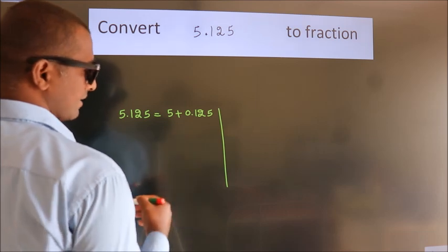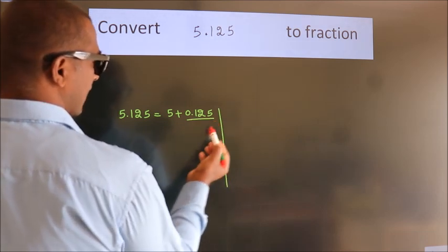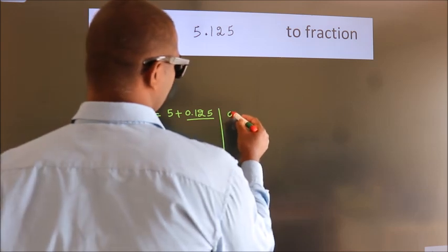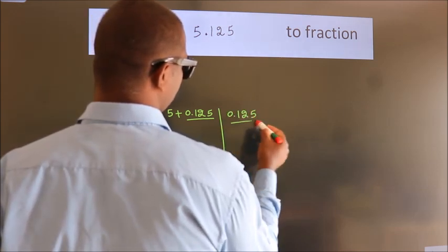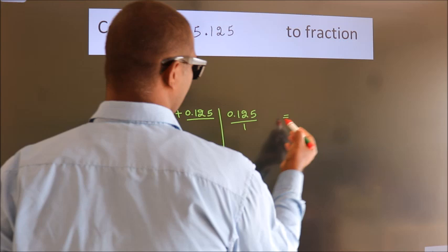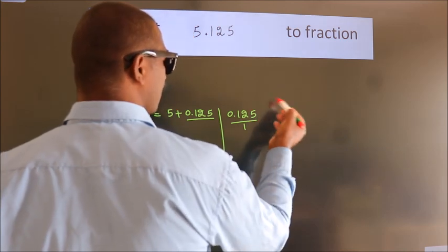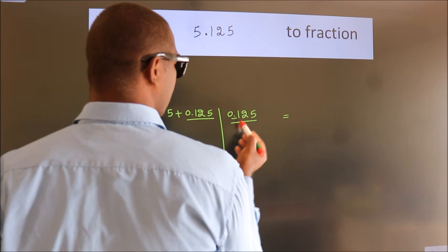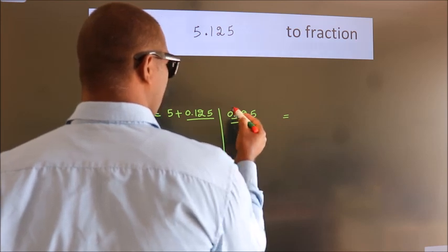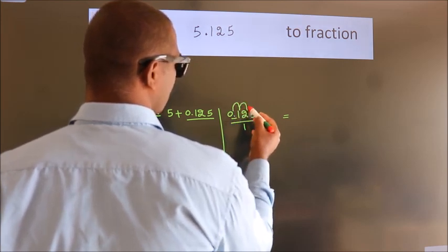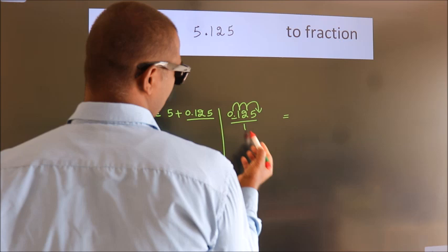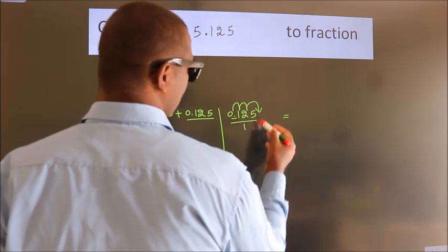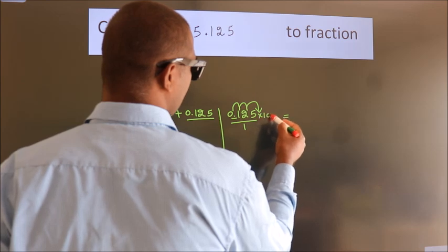Next, convert this to fraction over here. So 0.125, to convert this to fraction, we have to move this decimal after 1, 2, 3 numbers. To move this decimal after 3 numbers, we have to multiply it with 1000.